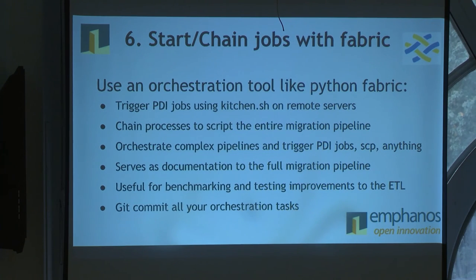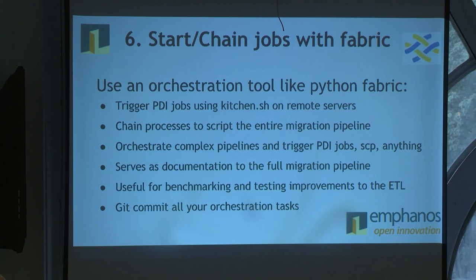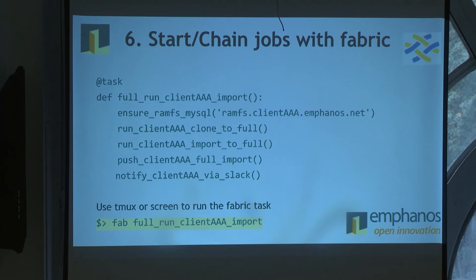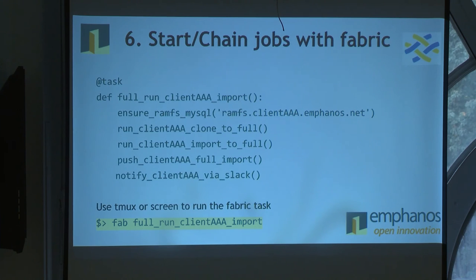Fabric is a great orchestration tool like Capistrano — basically a way of accessing a server remotely and telling it what to do in a scripted way using Python. You can create a task like 'run full client import' that calls a check function, does a clone, does an import, pushes the import for review to a staging server, and sends a Slack notification. It gives you a recipe of what's being done; each step is well defined. Then you just run 'fab run task' and it goes to the server and knows what to do.